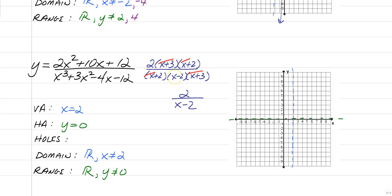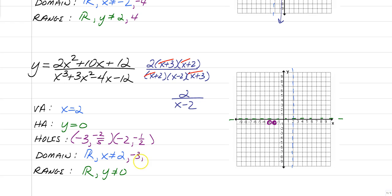This time we're going to have two holes. One at negative 3 from the x plus 3 that canceled, and another one at negative 2. Substitute both into the simplified equation. Substituting negative 3 gives negative 2 fifths, so at negative 3, negative 2 fifths, you have a hole. Substituting negative 2 gives negative 1 half, so place another hole there. So x is not allowed to equal 2, negative 3, or negative 2. Y is not allowed to equal negative 2 fifths or negative 1 half. Then type it into your graphing calculator and give a nice sketch.